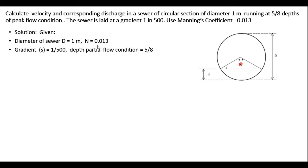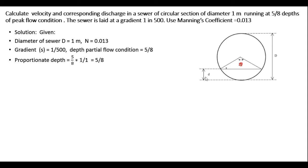The given parameters are Manning's coefficient n, and the gradient at which the sewer is laid. The depth of partial flow condition is 5/8 of the total depth, that is 5/8 times capital D. The proportionate depth can be found by dividing the depth in the partial flow case by the depth in the full flow case. Since the partial flow depth is 5/8 times 1 meter, and the full flow depth is 1 meter, the proportionate depth is simply 5/8.